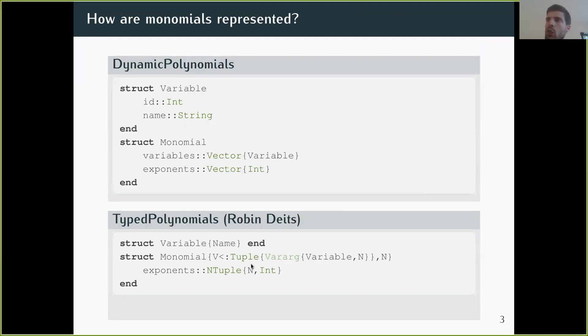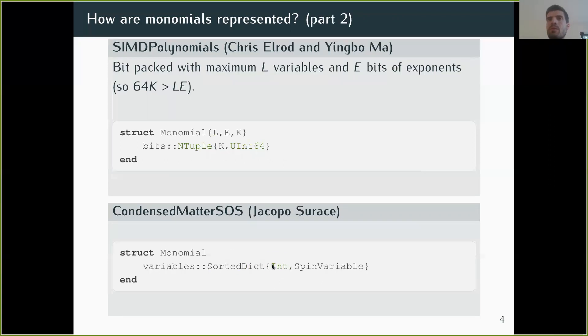In this representation, you assume the polynomial will fit in 64 bits, but maybe you know the polynomial actually fits in 16 bits. If the polynomial fits in 16 bits, then in 64 bits you can actually fit the exponents of four variables. So they have this packed representation of the monomials.